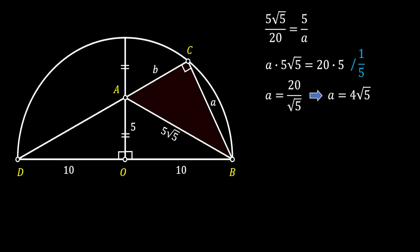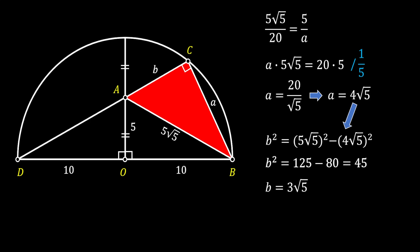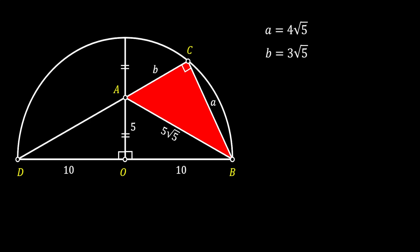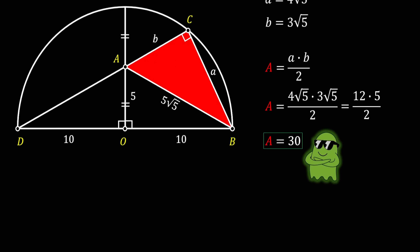Applying the Pythagorean theorem to the red triangle ABC: b² = (5√5)² − a². Substituting a = 4√5, squaring, we find b² = 45, so b = 3√5. The area is again (1/2)(4√5)(3√5) = 30 square units.